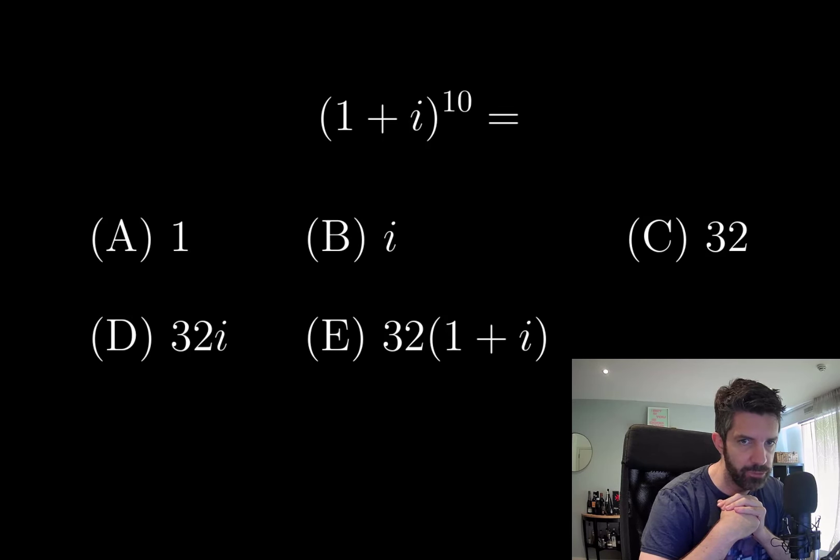But some of the options we can actually rule out immediately. It's certainly not going to be options A or B, because 1+i has a modulus of √2, and so (1+i)^10 should have a modulus of 32.